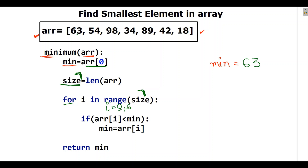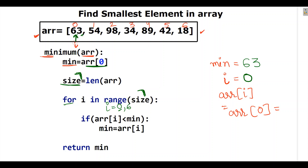First, i is 0. ARR[0] is 63 and min is also 63. We check: is 63 smaller than 63? No — so it goes back to the for loop with min remaining as 63.